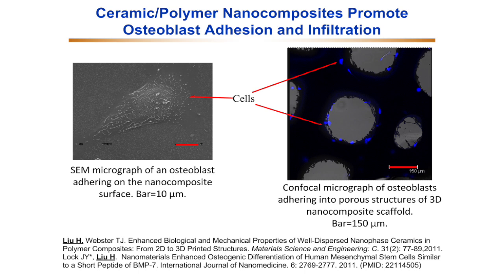The nanocomposites promoted osteoblast long-term functions — for example, mineral deposition on their surfaces — and also promoted osteoblast infiltration into 3D structures when we created a 3D-printed scaffold out of these nanocomposites.